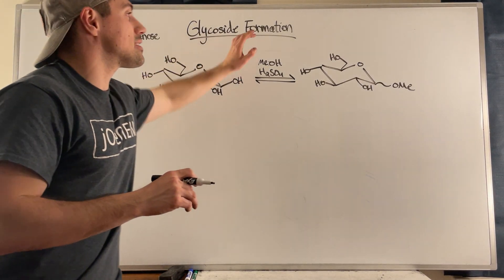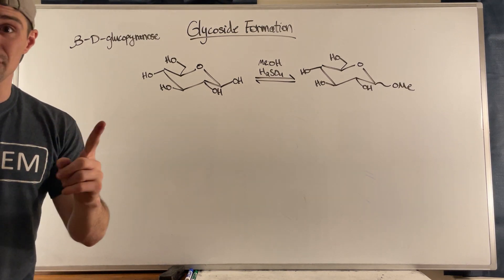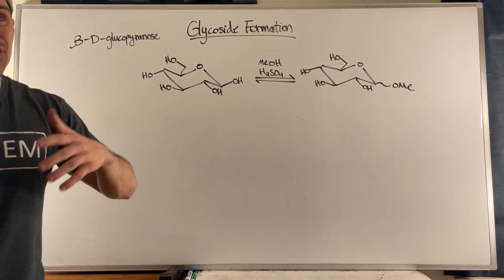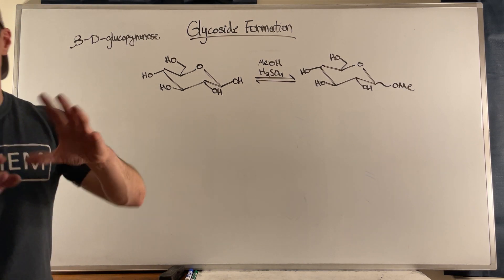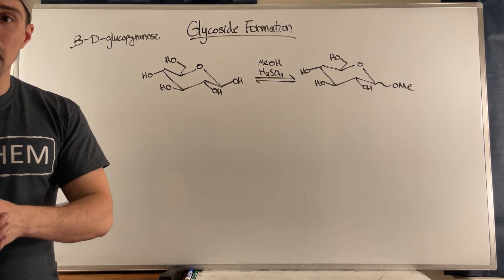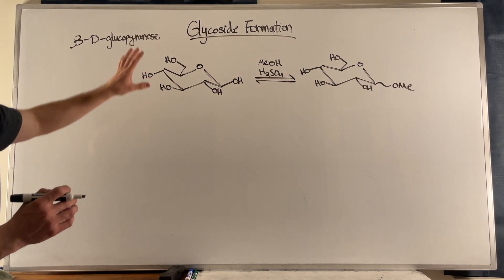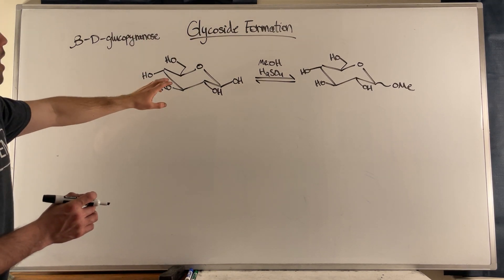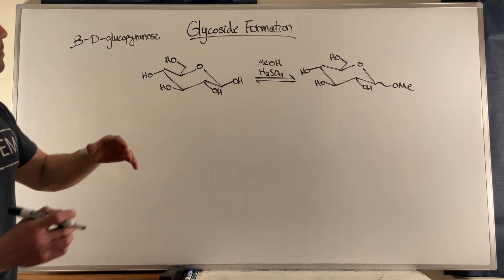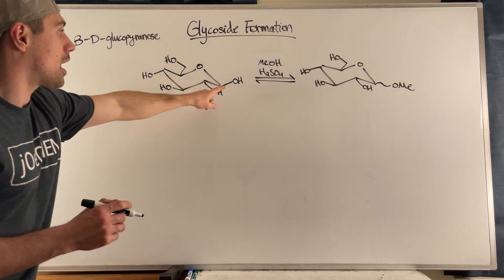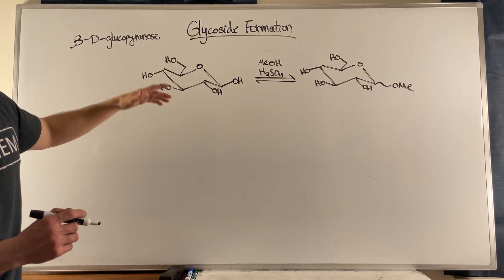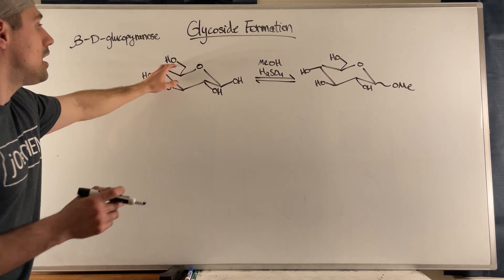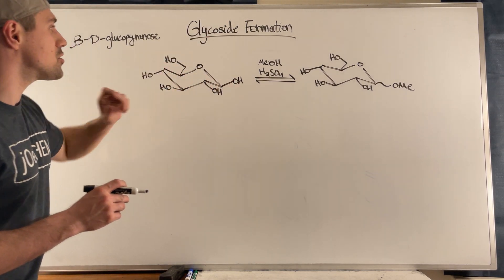So we're going to talk about glycoside formation in this video, and it's really just the swapping out of a little bit of hemiacetal-ish type chemistry. So if we take a look up here, you'll see I have beta-D-glucopyranose, right? Six-membered ring. We got the beta because we got the CH2OH, which I haven't condensed, I haven't expanded, and then they assist one another.